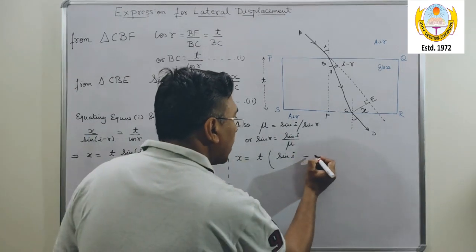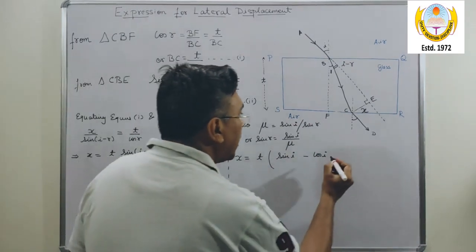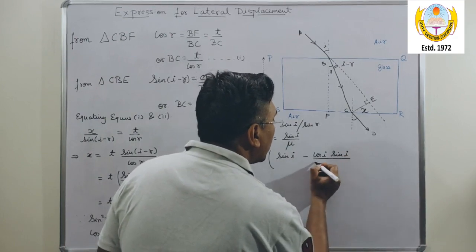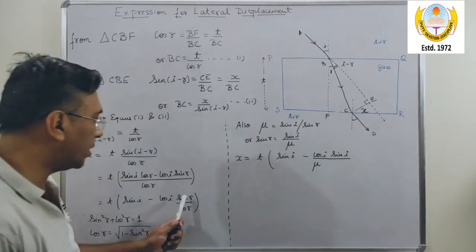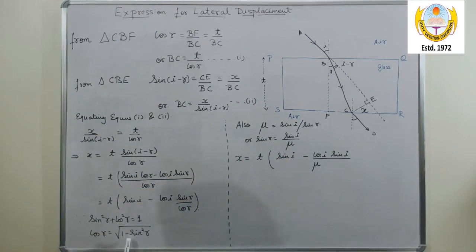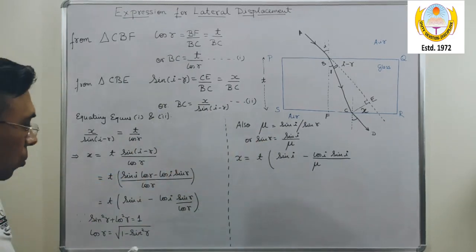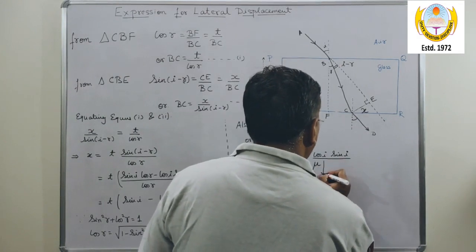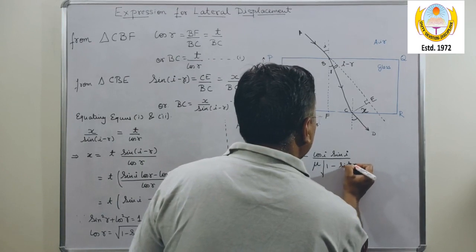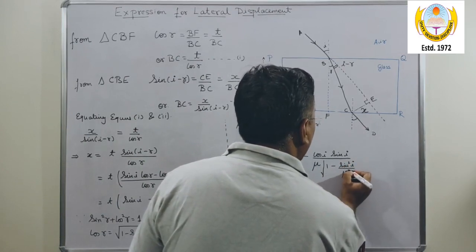So now using these two relations, cos R equals under root 1 minus sine squared R and sine R equals sine I upon mu, I can rewrite this expression as X equals to T sin I cos I, instead of sine R I am writing sine I upon mu, and instead of cos R I am writing under root 1 minus sine square I upon mu square.